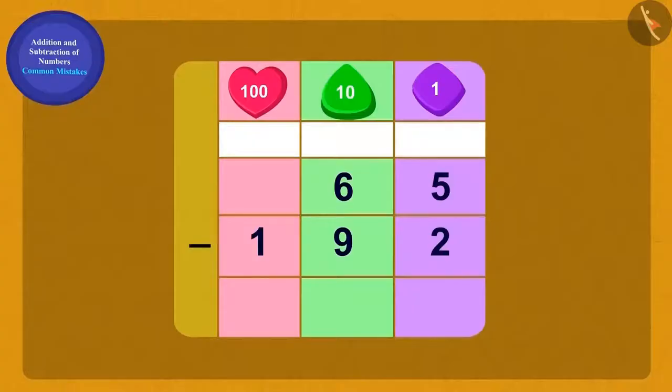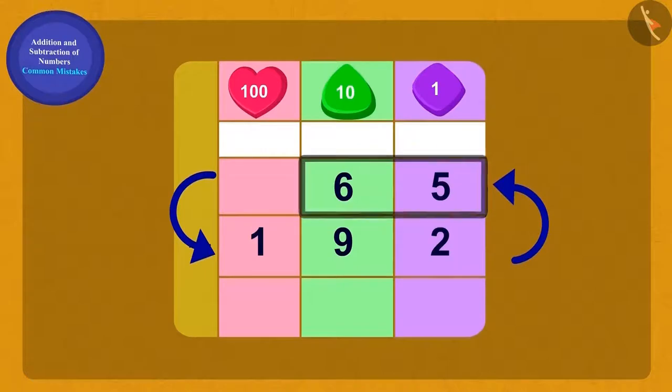While subtracting numbers, we always have to subtract the smaller number from the larger number. To show this, we write the larger number above the smaller number.